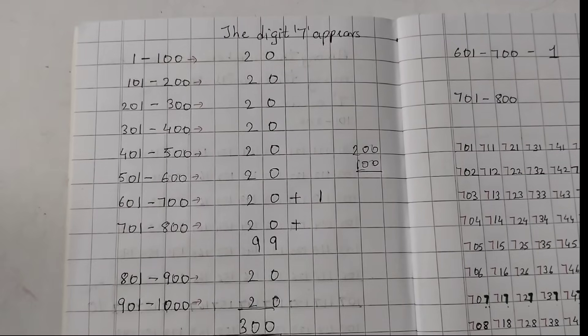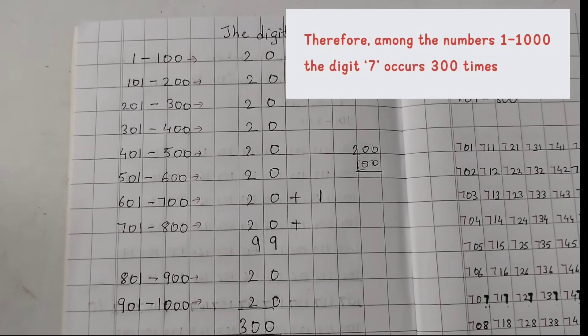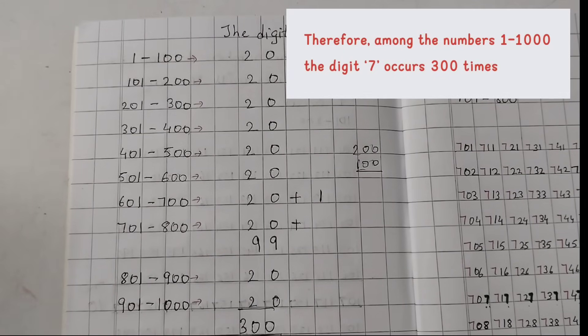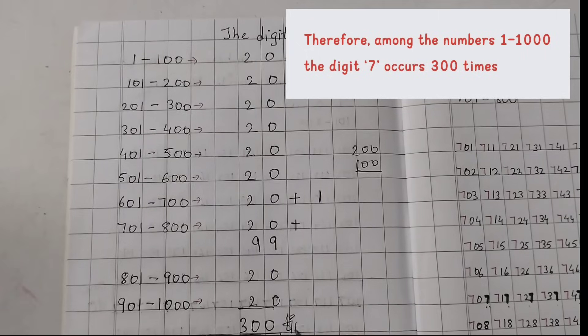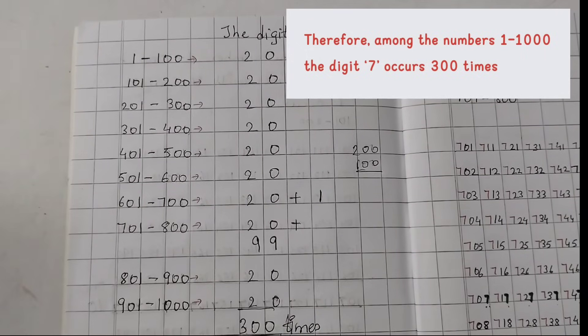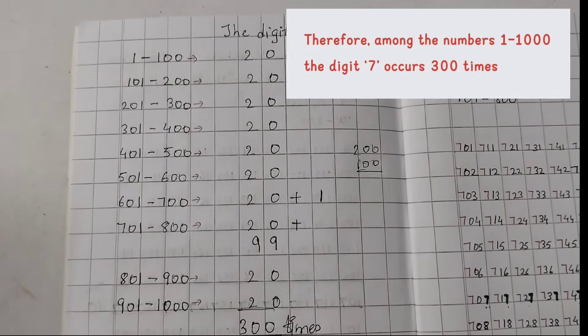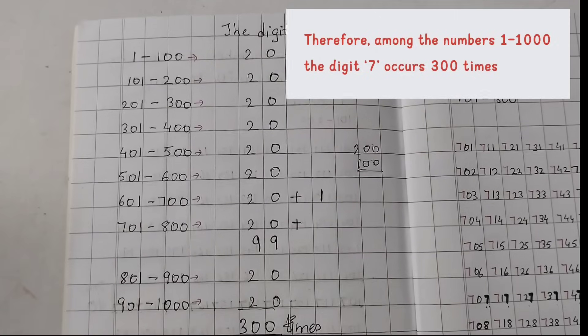So, we can say, therefore, the digit 7 appears 300 times—300 times among the numbers 1 to 1000. I hope you find this video helpful. Thank you.